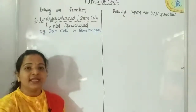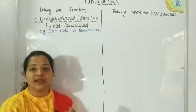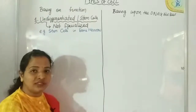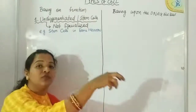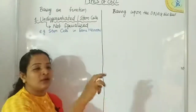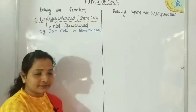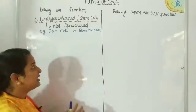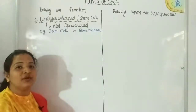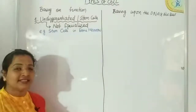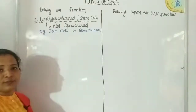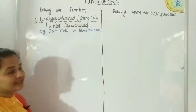Some stem cells divide and re-divide to become red blood cells; others divide to form WBCs and all types of WBCs; and some others divide to form platelets. In this manner, the lost cells are replaced, the volume of blood is maintained, and comes back to its original state. So stem cells present in the bone marrow are examples of undifferentiated cells.